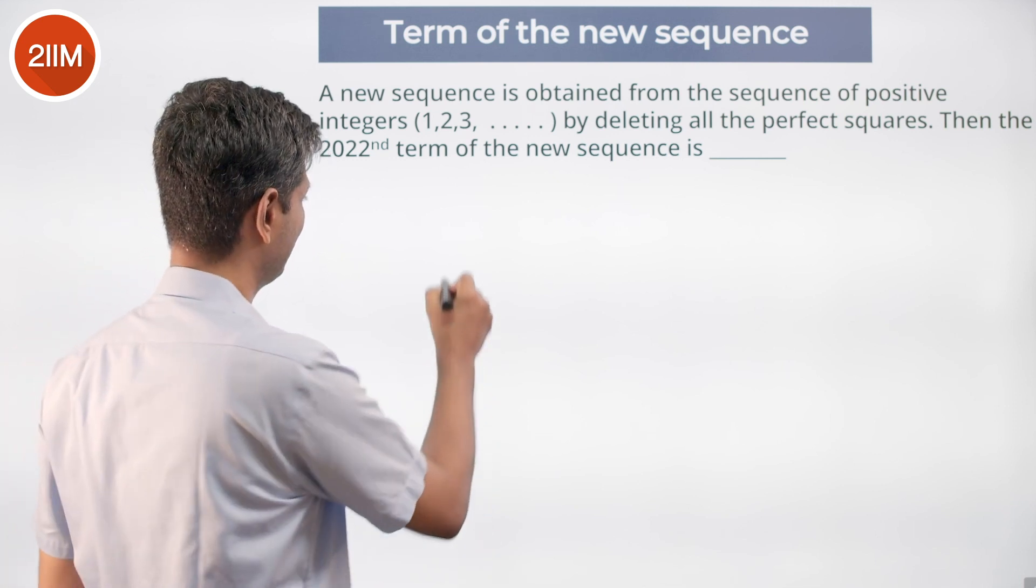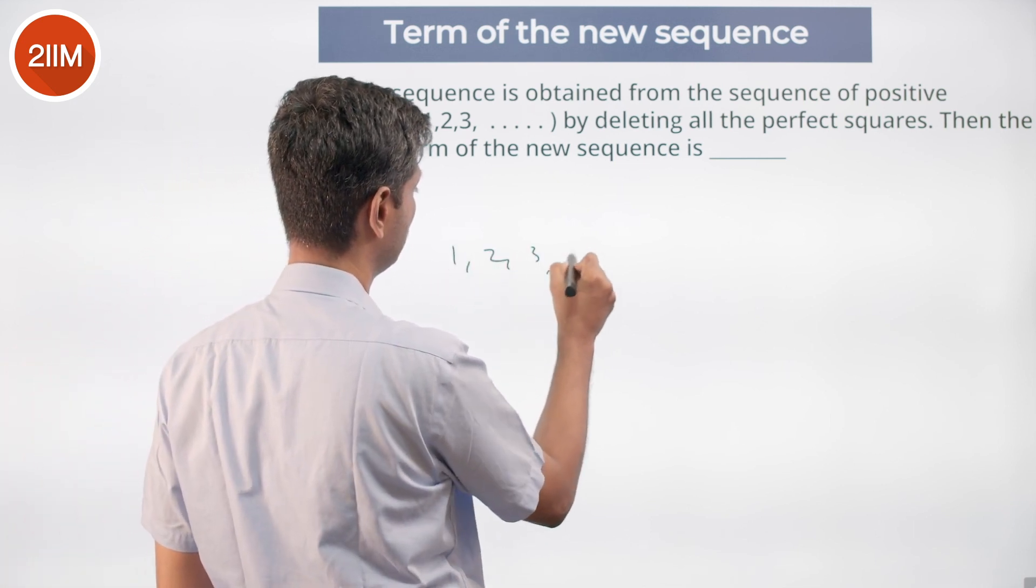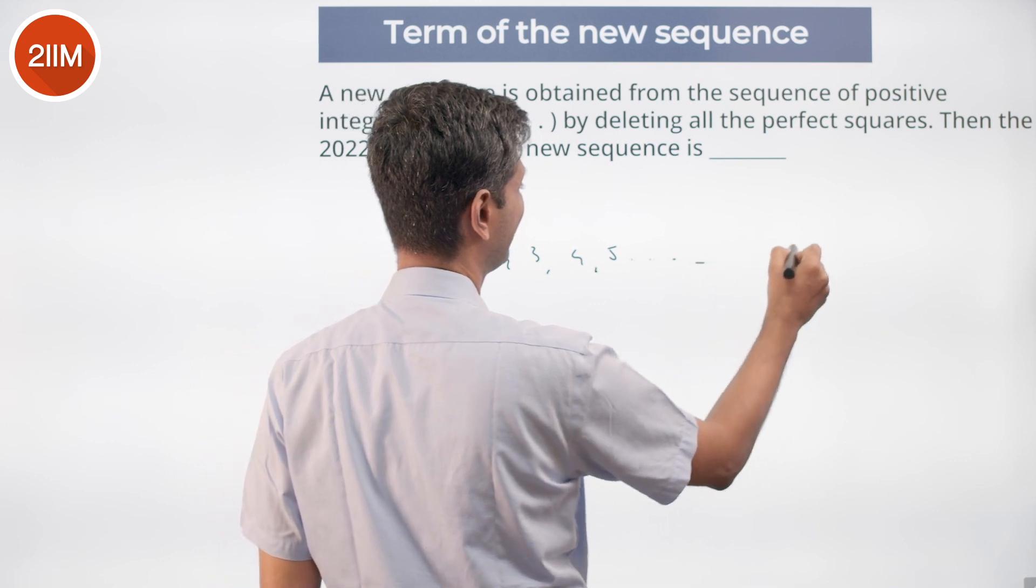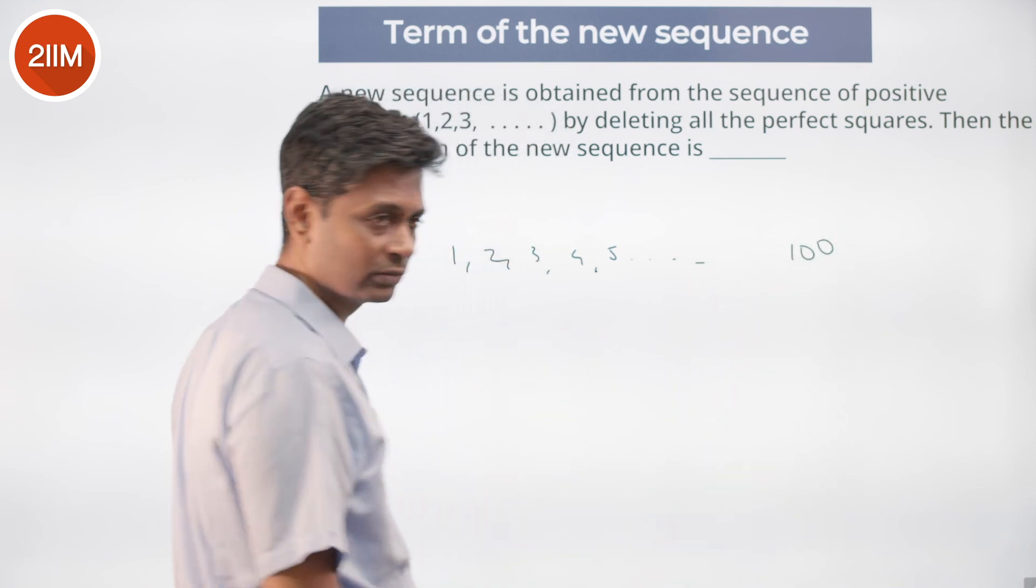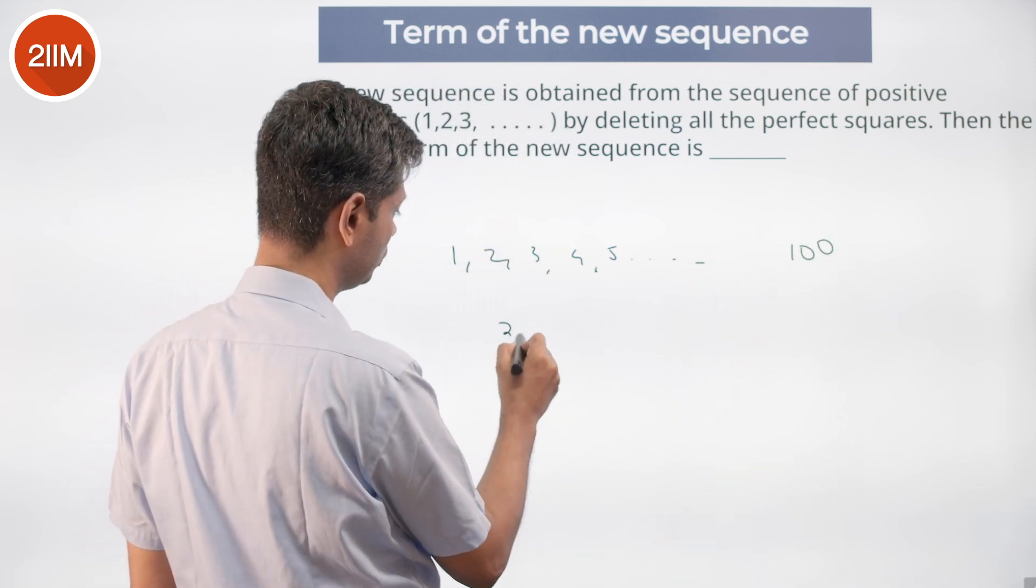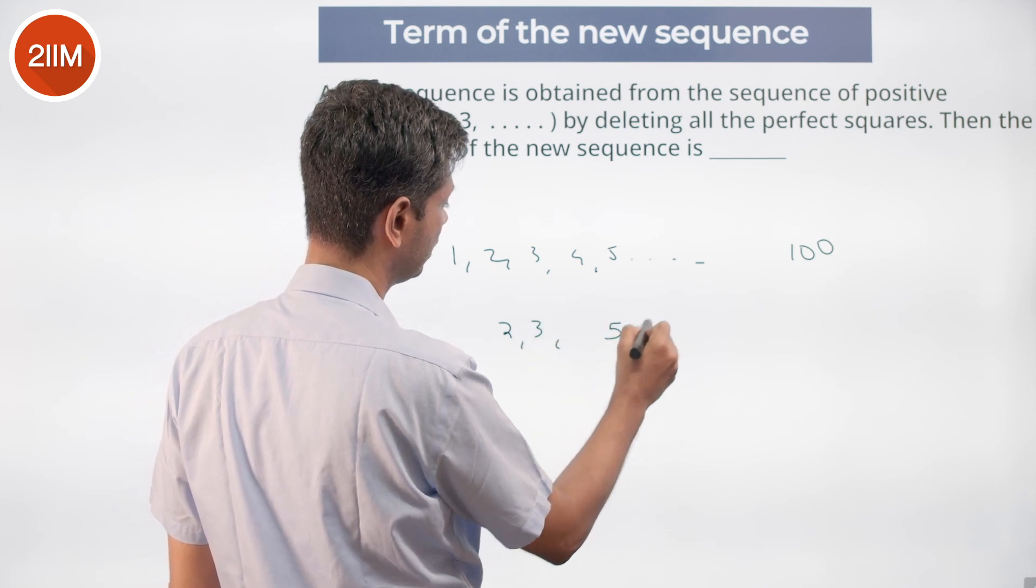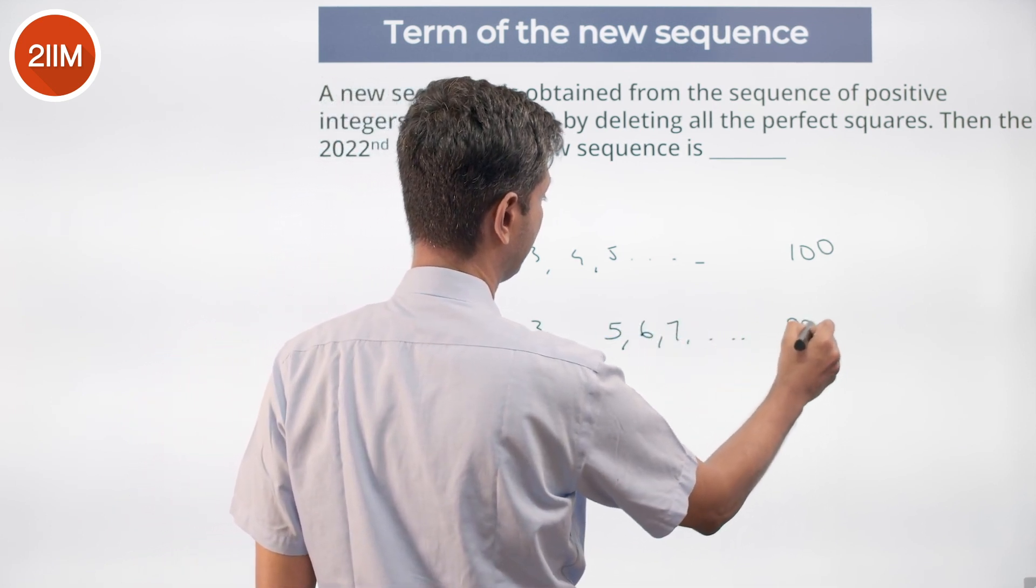Consider 1, 2, 3, 4, 5. If we consider till 100, the new sequence would be 2, 3, 5, 6, 7, till 99.